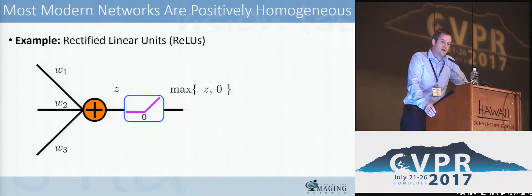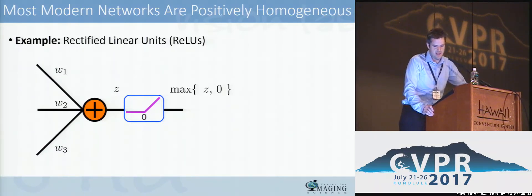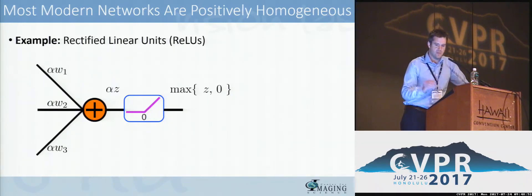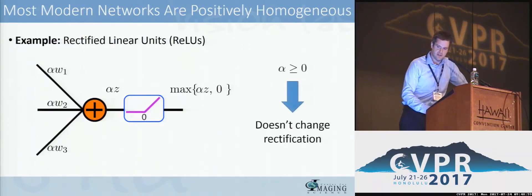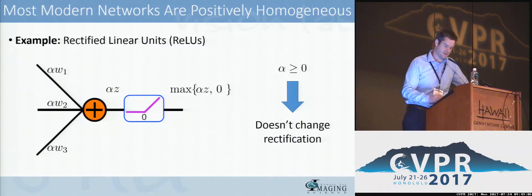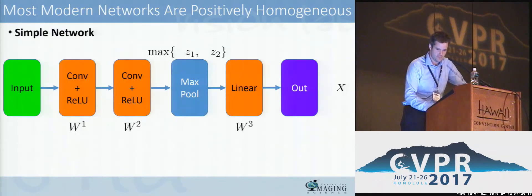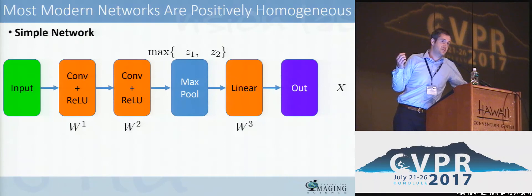Many modern neural networks satisfy positive homogeneity. For a simple example: a single rectified linear unit with three inputs weighted by W1, W2, W3 — if we scale these weights by alpha, this passes through the sum linearly. When we pass alpha into the rectification function, because alpha is constrained to be non-negative, it doesn't change the sign of Z, so it doesn't affect the rectification. We can move alpha outside the max function, and we see the ReLU is positively homogeneous with degree one. If we compose networks from blocks that are all positively homogeneous, the overall network will also be positively homogeneous.